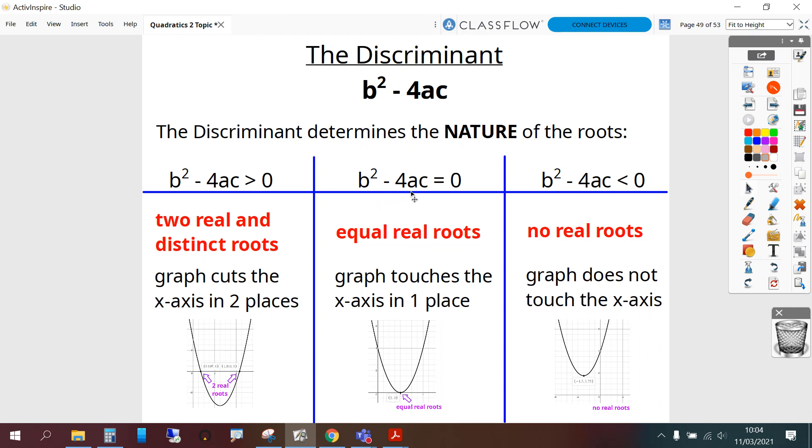When b squared minus 4ac equals 0 we get equal real roots. The graph touches the x-axis in one place.